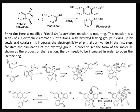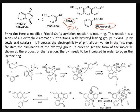In the synthesis of fluorescein, we have seen the reaction mechanism again. There is phthalic anhydride and 2 moles of resorcinol. In the presence of Lewis acid catalyst ZnCl2 — we can also use H2SO4 — it is a Friedel-Crafts acylation type reaction. In this Friedel-Crafts acylation reaction, the nucleophile will attack on the phthalic anhydride.